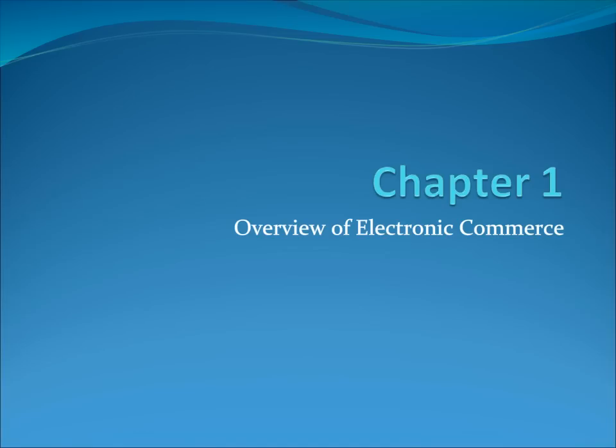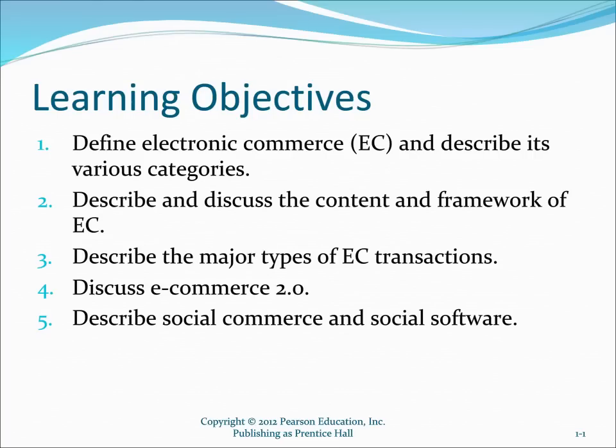Welcome to CIS 579 Technology of E-Business. This is Chapter One of our textbook by Turban, Electronic Commerce: Managerial and Social Networks Perspective, 2012. Learning objectives for this chapter are to define electronic commerce and describe its various categories, and to describe and discuss the content framework of e-commerce.